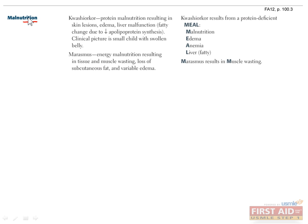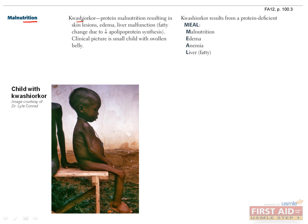Now we'll briefly go over malnutrition. Kwashiorkor is a state of specifically protein malnutrition, which manifests as skin lesions, edema, anemia, and liver malfunction with fatty change. Protein deficiency can cause edema because proteins such as albumin maintain the oncotic pressure of the vasculature; without them, blood can leak out into the surrounding tissues. The clinical picture of Kwashiorkor is a child with thin limbs and a swollen belly, caused by edema.